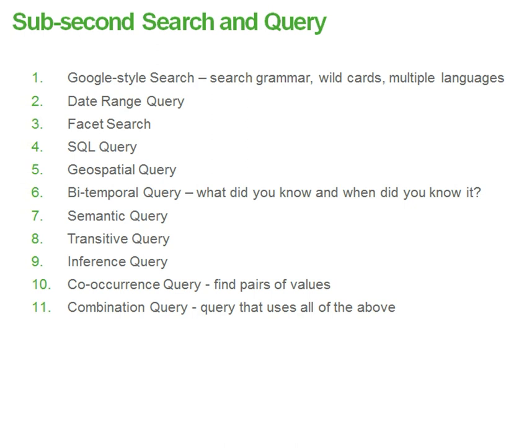the faceted search, which was shown earlier, SQL query — of course, we'll have that powerful relational algebra in the Data Hub, as well as these 11 other items.